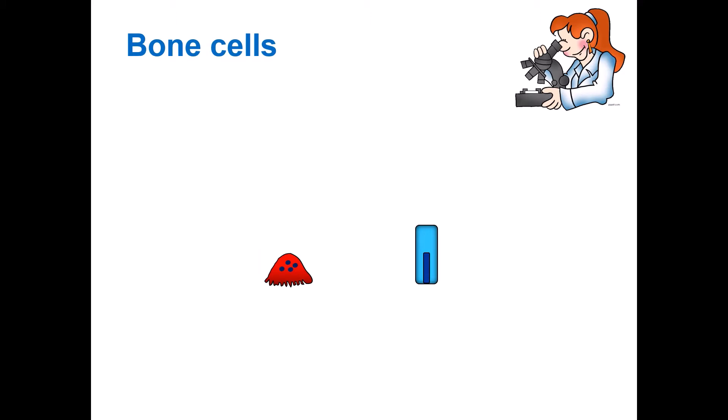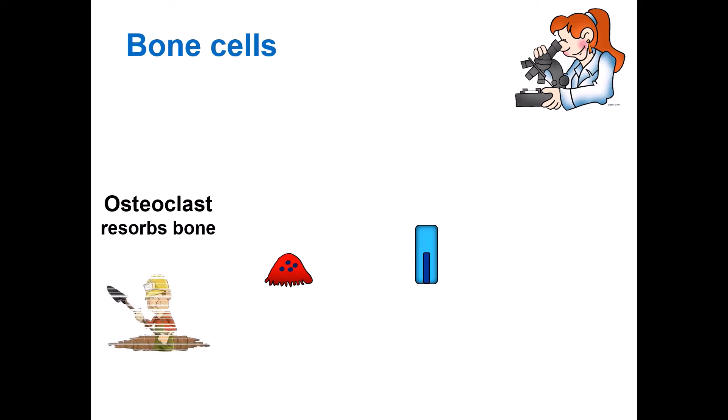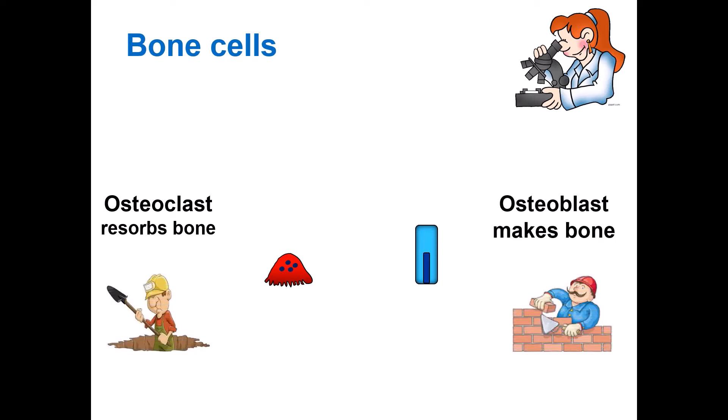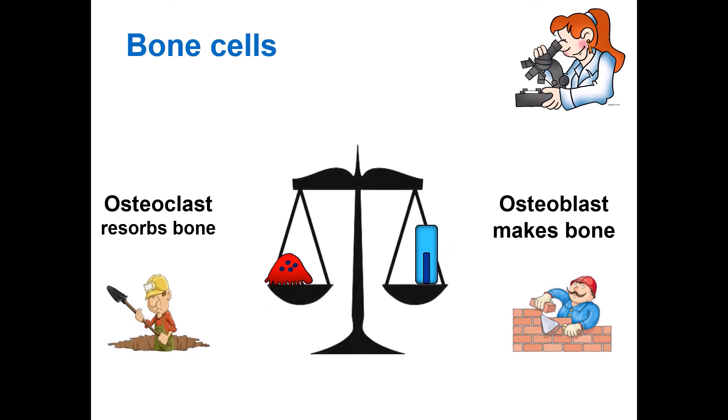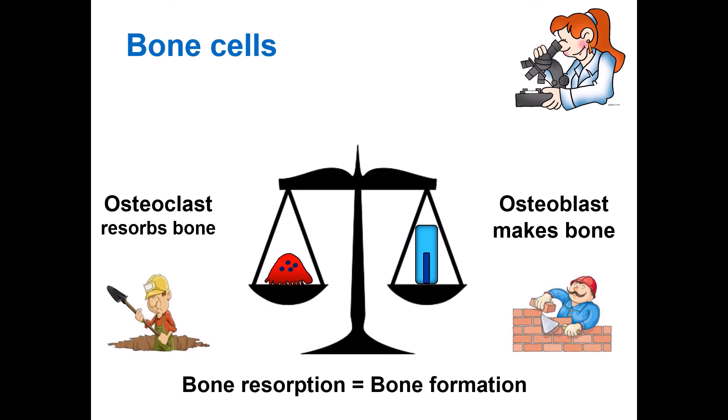This is possible due to the action of two types of bone cells which we can see under the microscope. Osteoclasts — an example of which you see on the left, the red cell — and osteoblasts on the right, the blue cell. The osteoclasts resorb bone whereas osteoblasts form bone, and their action is completely balanced in healthy bone, meaning the amount of resorbed bone equals the amount of formed bone.